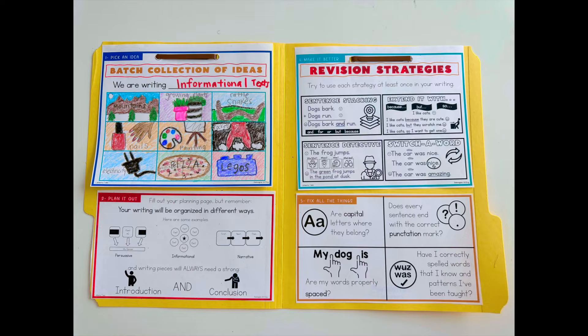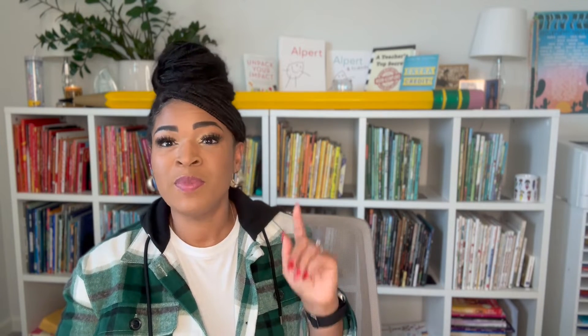You've got 'first things first, pick an idea,' then structures for 'plan it out' — about how to organize your writing. Different kinds of writing have structures that need to be followed. Making sure kids even in kindergarten understand writing structure is powerful and gives them a clear vision for their writing. Third step: write, write, write — whatever the writing piece goes in there. Then we've got revision strategies, which come from my syntactic awareness routines.